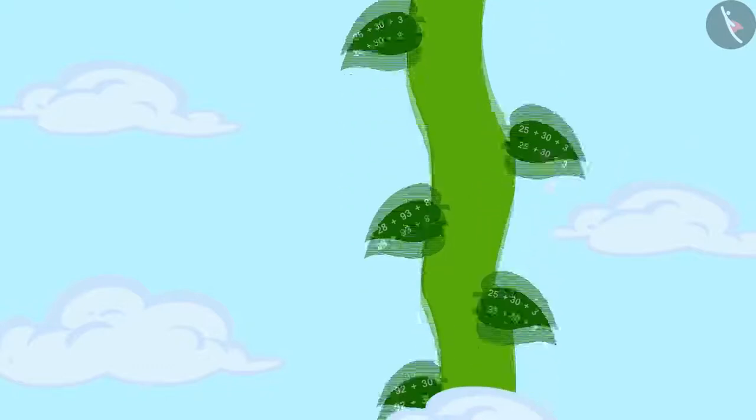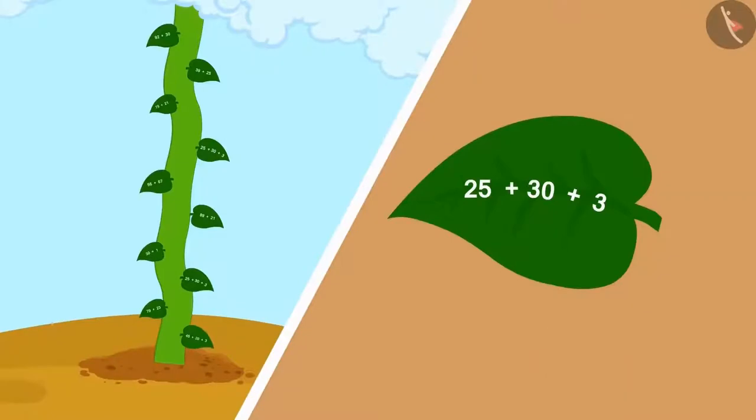The vine was very thick and tall, going so high that it reached above the sky. There was something special about this vine: a math puzzle was written on each of its leaves.